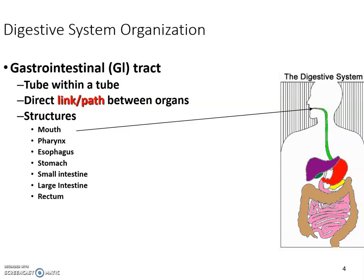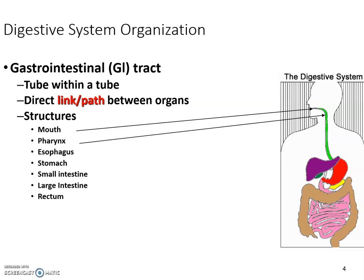The mouth is where we do a lot of the mechanical digestion — the chewing, the grinding, and moving food with our tongue. The saliva has water that naturally helps break things down, and also contains some enzymes. The pharynx acts as a separator directing where food is supposed to go, and the esophagus is the small tube tucked behind the trachea.